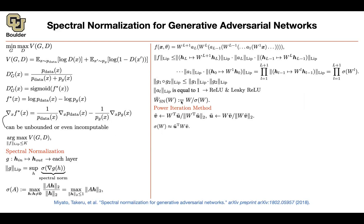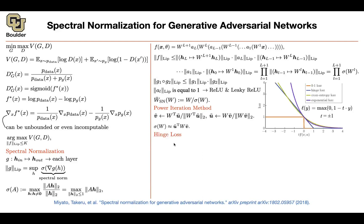In terms of loss function, we've learned a family: the original GAN loss, the Wasserstein GAN loss, the least squares loss. Here is another one — the hinge loss. The hinge loss uses labels of −1 or +1 as ground truth instead of 0 or 1.